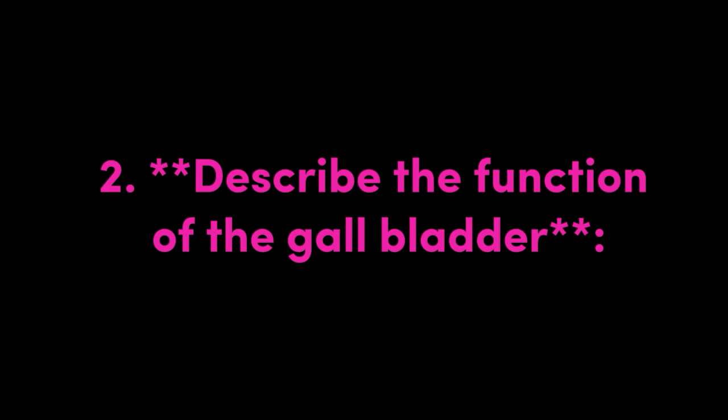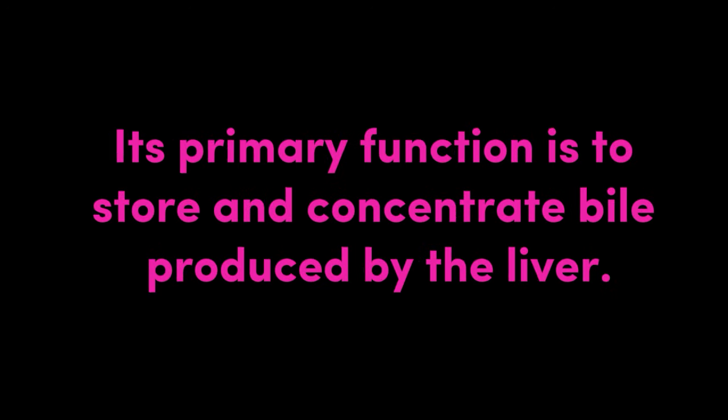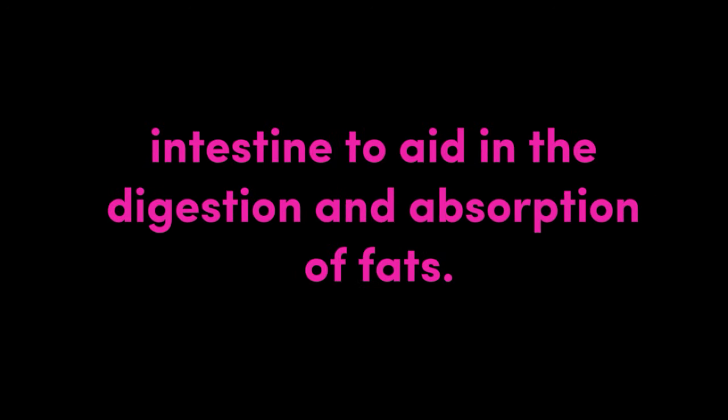Question 2: Describe the function of the gallbladder. Answer: The gallbladder is a small sac located beneath the liver. Its primary function is to store and concentrate bile produced by the liver. When needed, the gallbladder contracts and releases bile into the small intestine to aid in the digestion and absorption of fats.